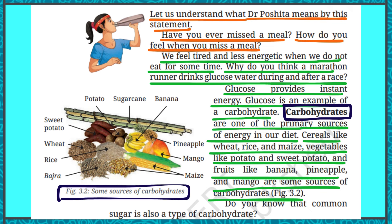The important point to remember about carbohydrates is that they provide instant energy — as soon as we consume carbohydrates, we get energy immediately. Common sugar is also a type of carbohydrate. Now that we have learned about carbohydrates, let us learn about fats.